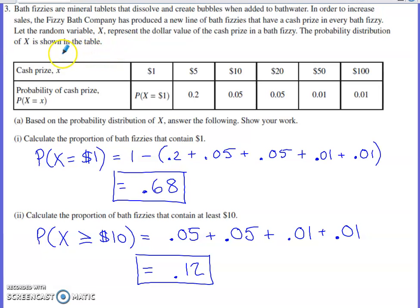The random variable X is the dollar value of the cash prize in a fizzy. The probability distribution for X is shown in the table. The probability of getting a $1 prize is not explicitly specified. Probability of getting a $5 cash prize is 0.2, and $10, $20, $50, and $100 throughout the rest of that table.